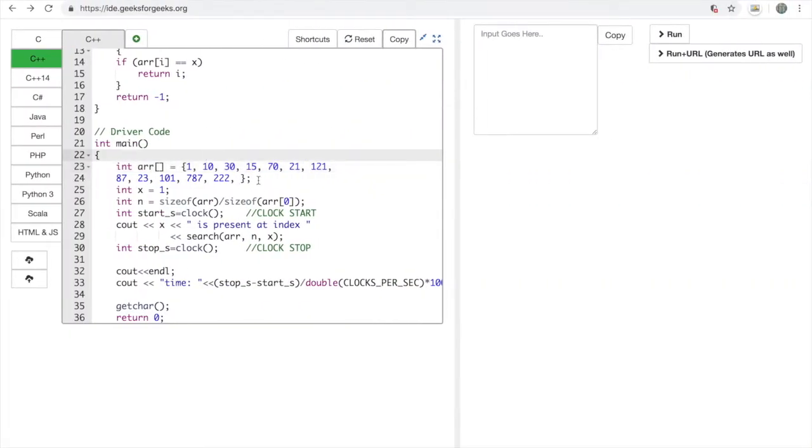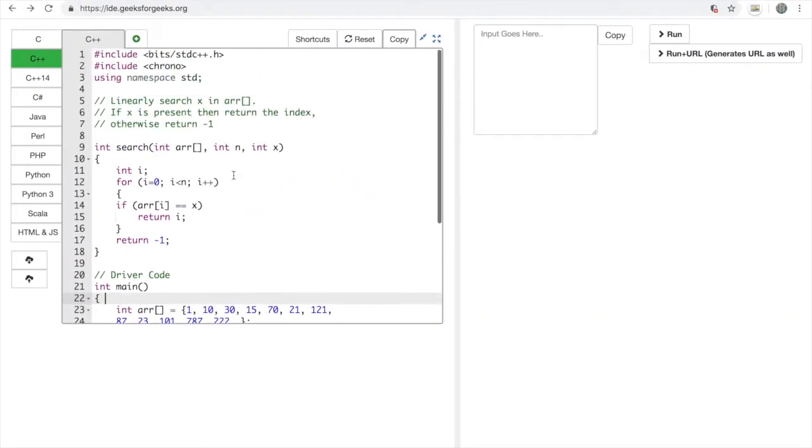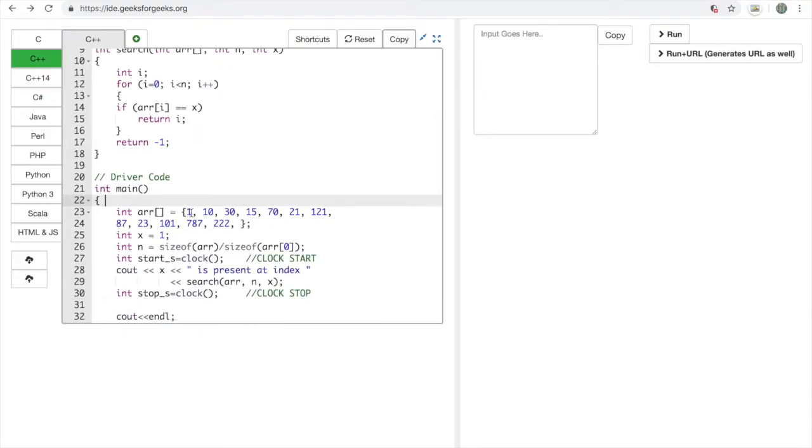This is the code for linear search algorithm. If we search for 1, it will give the results quickly. But if we search for 222, it will take more time because it will go to each element one by one.